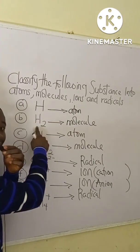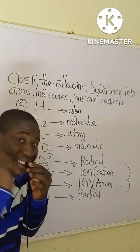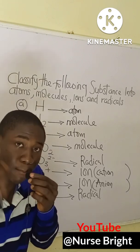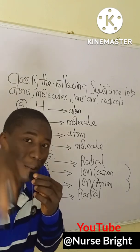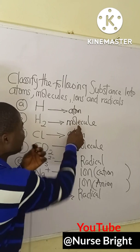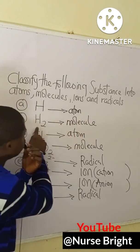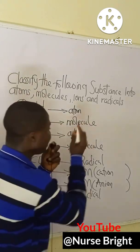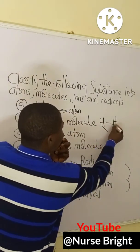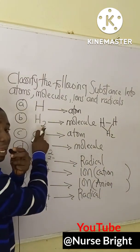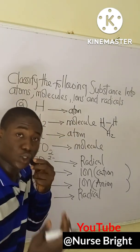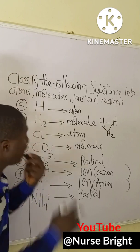For option B, it is still hydrogen but now in the molecular form. A molecule is formed from at least two atoms. This substance is a molecule because we have two atoms of hydrogen — H bonding to H — giving us H₂. So this is the molecular form of hydrogen; we call it a hydrogen molecule.